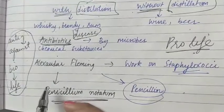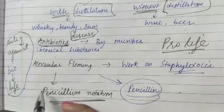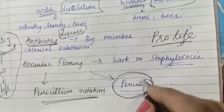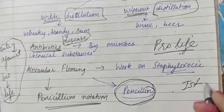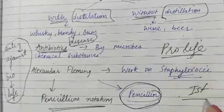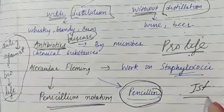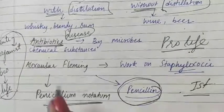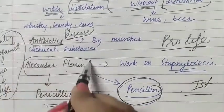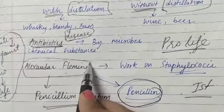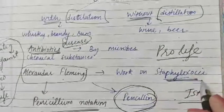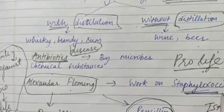The first antibiotic ever created was penicillin, and its discovery was a chance discovery. A scientist named Alexander Fleming was working on a bacterium called Staphylococci.